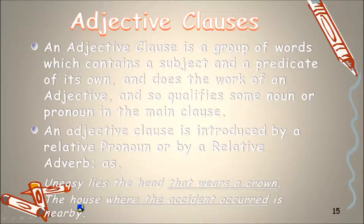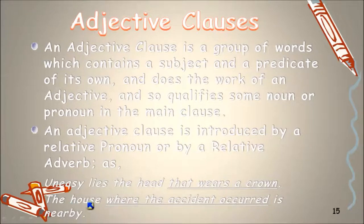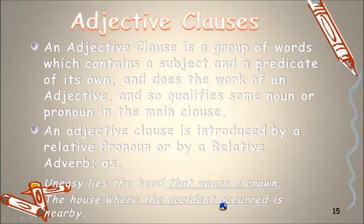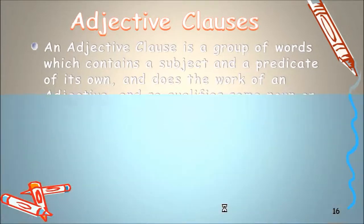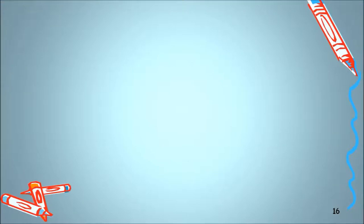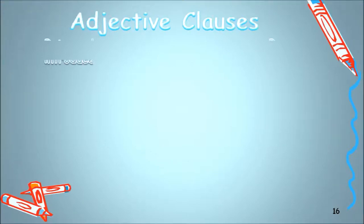The same thing happens in the sentence: 'The house where the accident occurred is nearby.' The relative adverb 'where' is adjacent to the antecedent noun, coming just after it and describing that noun. This gives the clause the characteristics of an adjective, so we call it an adjective clause — also called a relative clause because of those relative adjectives and relative adverbs.